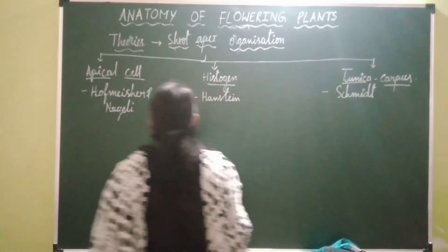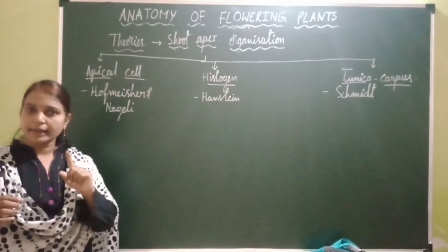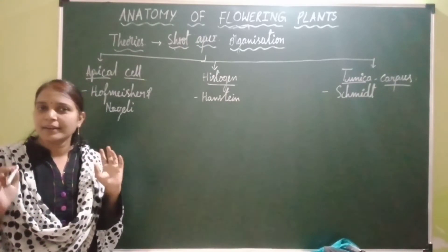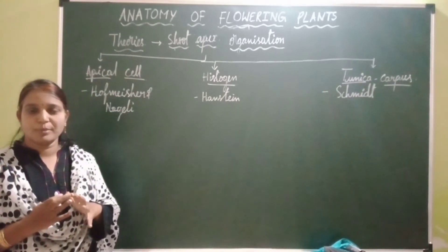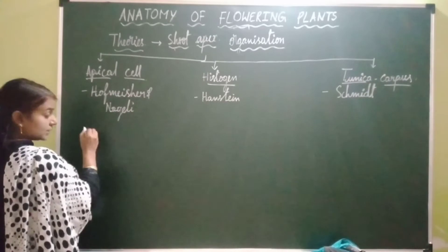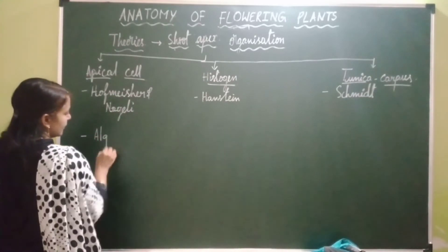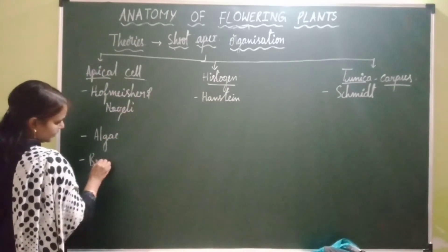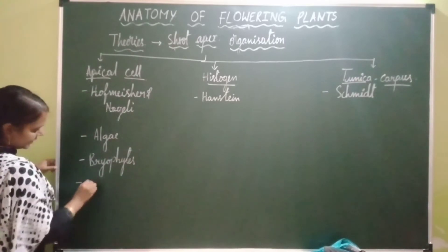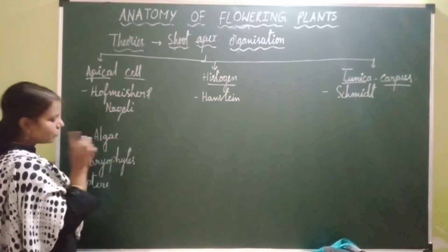According to the apical cell theory, the shoot apex consists of only one meristematic cell at the apex, and that single cell is responsible for the formation of all different types of cells in the shoot. This theory is applicable only to lower plants like algae, bryophytes, and pteridophytes.